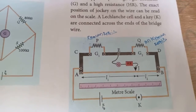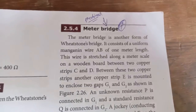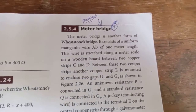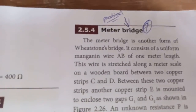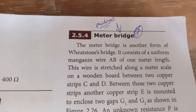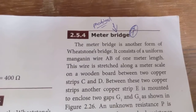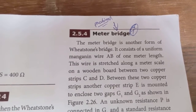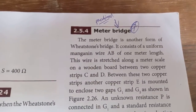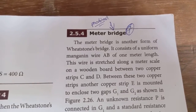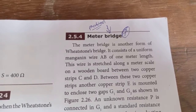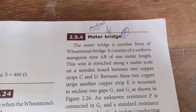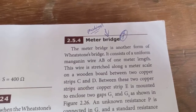The meter bridge is another form of the Wheatstone bridge. It consists of a manganine wire AB of one meter length. This wire is stretched along a meter scale on a wooden board between two copper strips C and D.